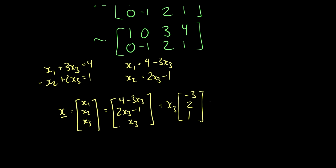So we can factor x3 out and we'll get negative 3 times 2 times 1, or negative 3, 2, 1. But then we have this remaining vector consisting of this constant 4 and this constant negative 1, and then of course there's a 0 there.